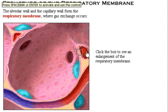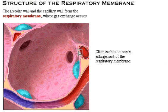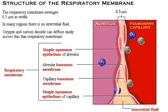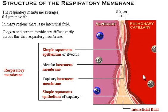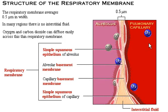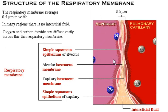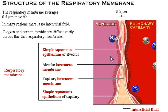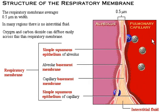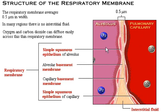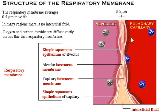Now let's look at how the gas exchange actually occurs. The capillary is here and this is the alveolus. At an enlarged view, we can see that oxygen is transported from the alveoli into the capillaries, and carbon dioxide from the capillaries is transported out into the alveoli. So oxygen goes from the alveolus to the capillary, and carbon dioxide goes from the capillary to the alveolus. This is the first gas exchange, occurring at the lungs.